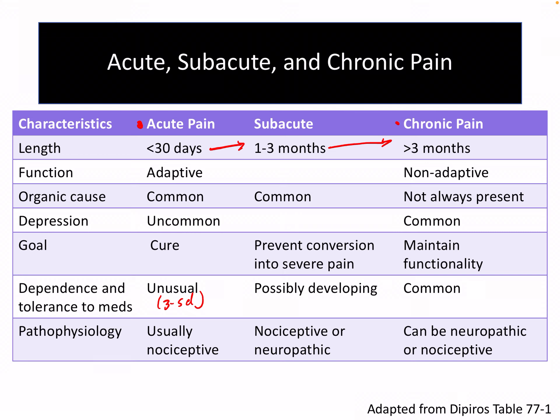Subacute pain is really in that waystation between when patients have had their initial injury and they're heading towards chronic pain. Our goals here are really to prevent severe pain where the patient finds it intolerable, or prevent the progression to chronic pain. Dependence may be developing to certain drugs, especially if you've been on them for over 30 days.